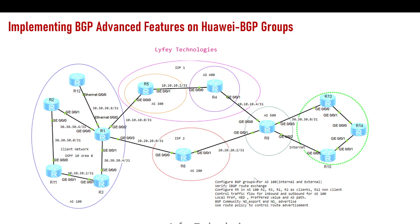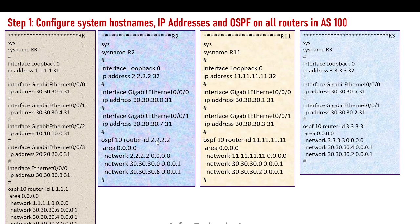For the configuration, Step 1 as usual is configuring system hostnames, IP addresses, and OSPF on all routers. We'll be using loopback zero for connectivity, and OSPF as our IGP to ensure reachability — especially from R1 to the other routers R2, R11, R3, and R12. You need to assign IP addresses on interfaces, create loopback zero, and configure OSPF process 10. All routers are in area zero, and we advertise the loopback zero and connected interfaces.